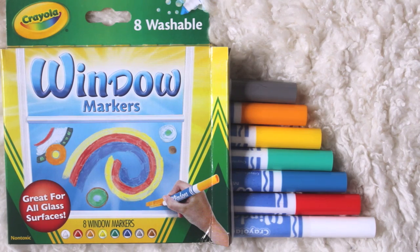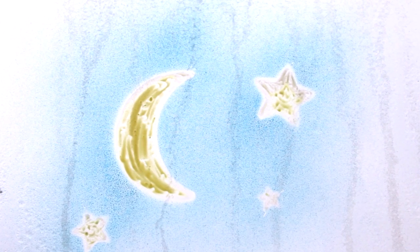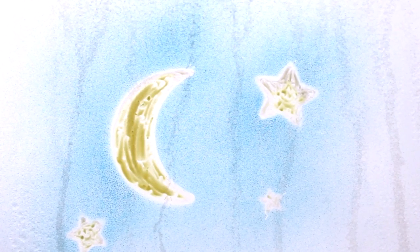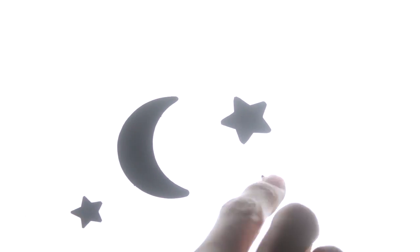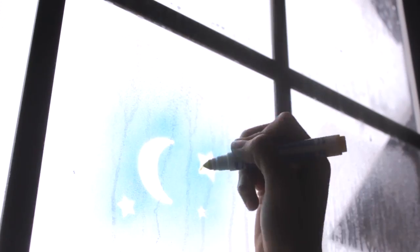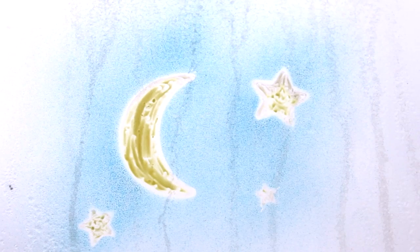By using the Crayola window markers, you are able to make designs onto glass and shiny surfaces. I decided to make this cute little constellation on my window by using some of the templates that are already included in the air marker sprayer box. Start by popping out all the stencils. Then arrange the pop pieces onto your window however you wish. With the device, begin giving the area a few layers of color. Last, I just colored in the blank sections with a yellow marker and it was done.